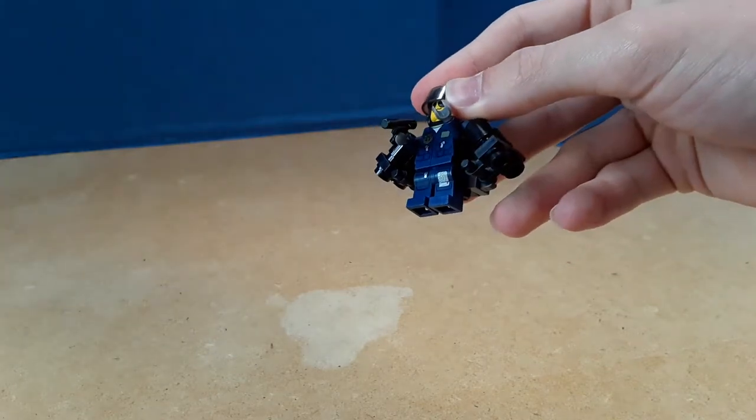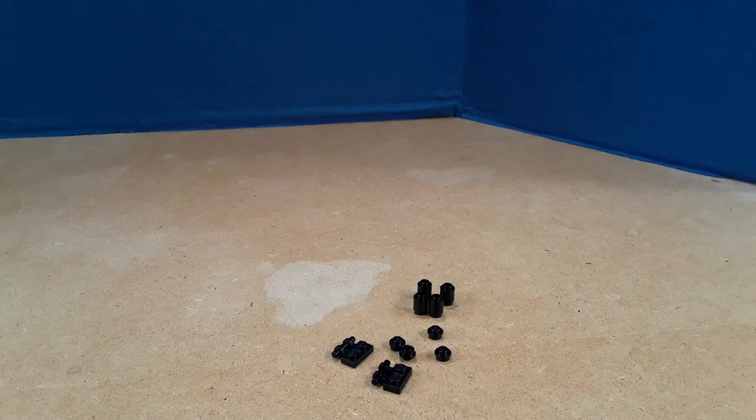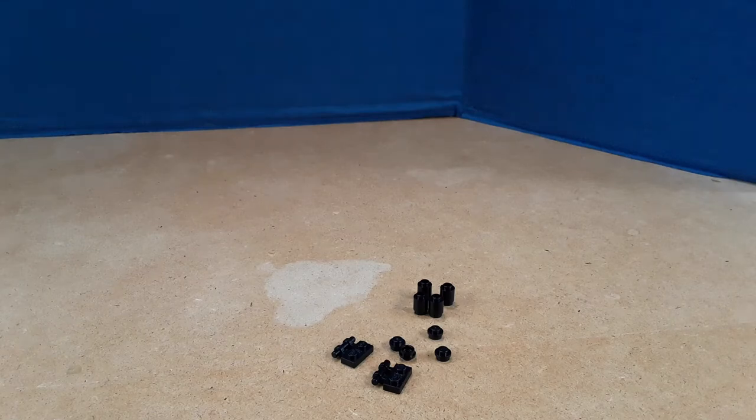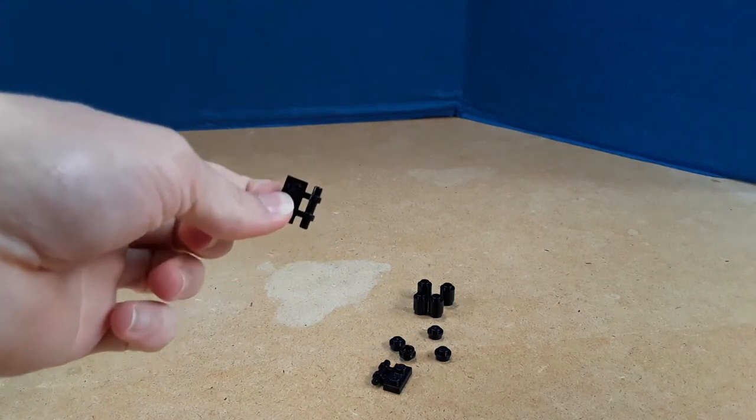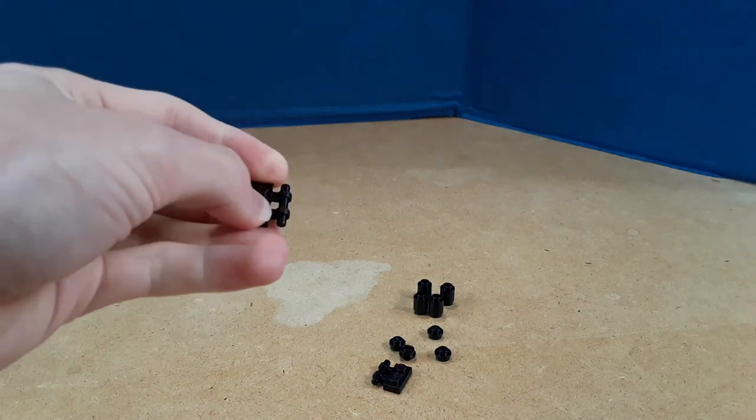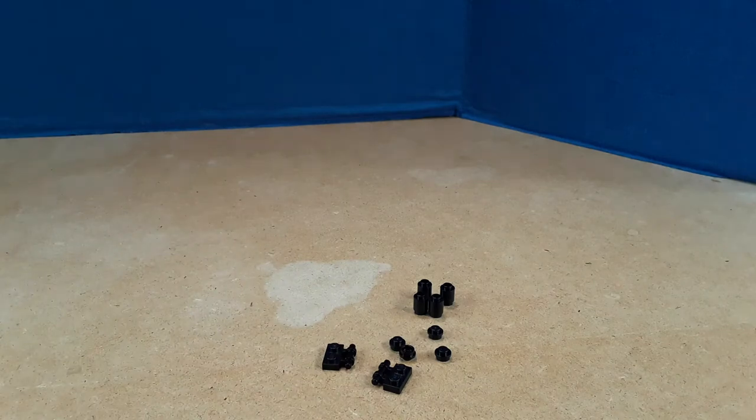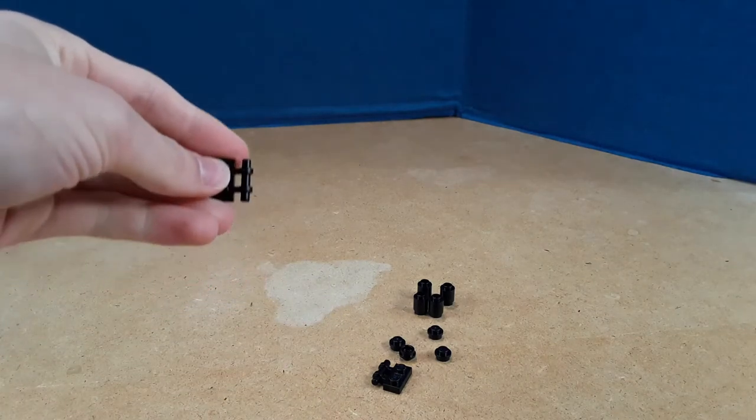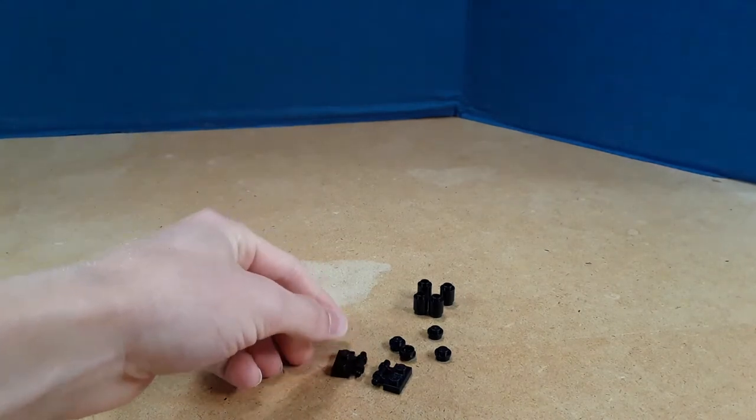Here's the parts for the jets: four one-by-one round black bricks, four one-by-one black plates, and two of these one-by-two plates with a bar on it. Now it doesn't have to be like this where it has these two things. It could be like the other ones where it's a smooth bar all throughout, doesn't really matter, just as long as the minifigure can hold on to it.